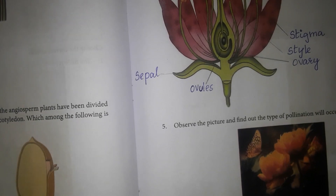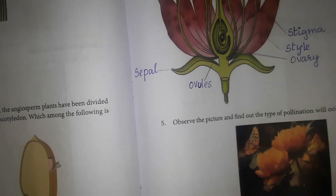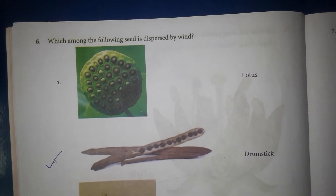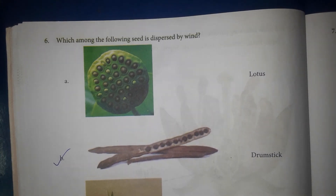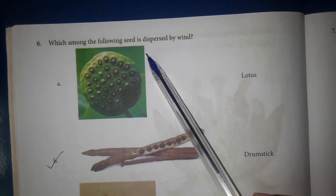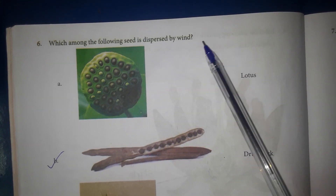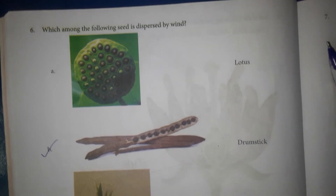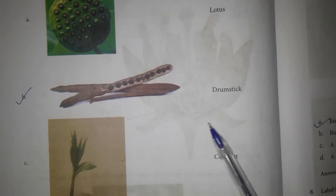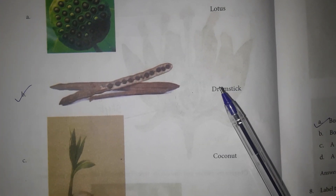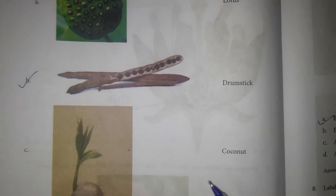Question 6: Which among the following seed is dispersed by wind? Answer — Drumstick. This is the answer box.